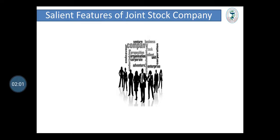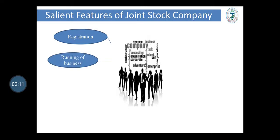Salient features of joint stock company. Registration: a company requires registration under the Companies Act 1956. Running a business: business is run by the board of directors, elected by the members in the general body meeting of the company.